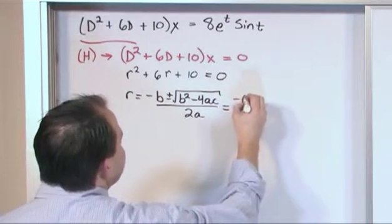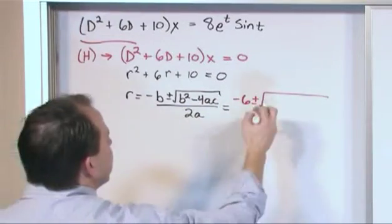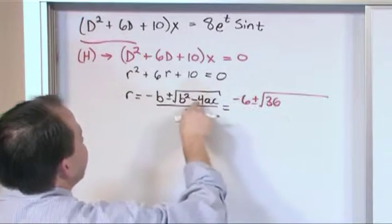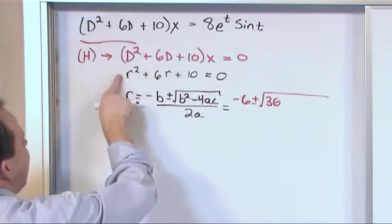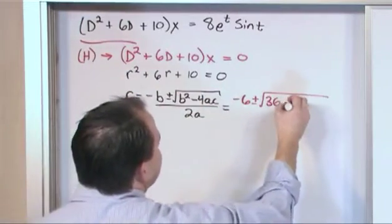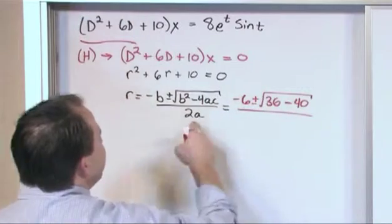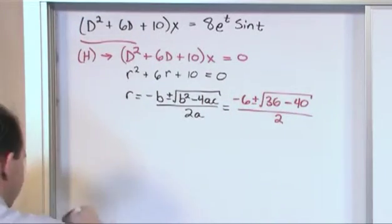So negative b is negative 6 plus or minus square root, 6 is b, so 6 squared is 36 minus 4ac. 4 is this, a is 1, and c is 10. So 4 times 1 times 10 is 40, so it's minus 40. And on the bottom is 2 times a, 2 times 1 is 2.